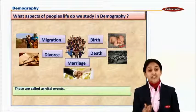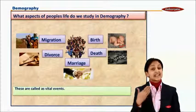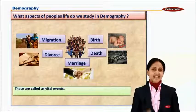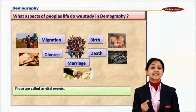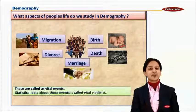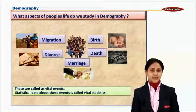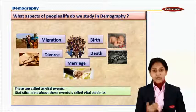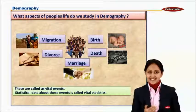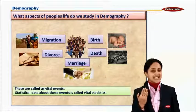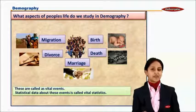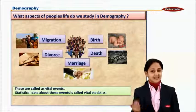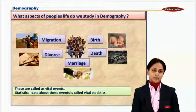We measure these events — that is, we collect statistical information about these events — and that statistical information is called vital statistics. So when we are able to measure the vital statistics, we are able to measure the various aspects of our demography or population, which is size, structure, composition, and so on.